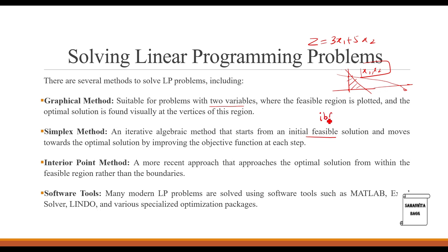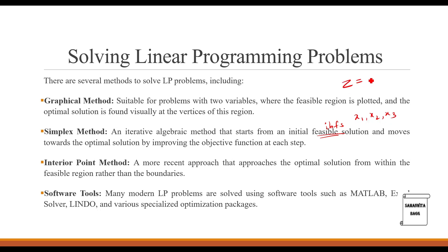The simplex method is an iterative algebraic method that starts from an initial basic feasible solution. We find initial values of X1, X2, X3, substitute into the objective function — say Z = 3X1 + 4X2 + 7X3 — and get an initial value of Z. This is not the final solution. We then iterate, solving again and again until we reach the optimum value of Z along with the corresponding values of X1, X2, X3, which must remain non-negative throughout. For maximization we get a particular maximum Z; for minimization we get the minimum Z.